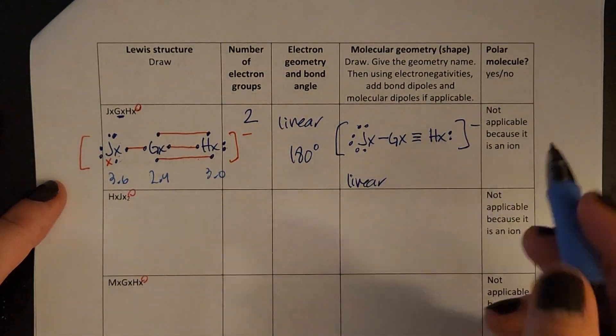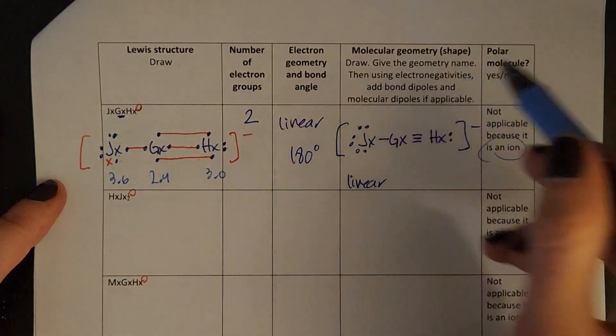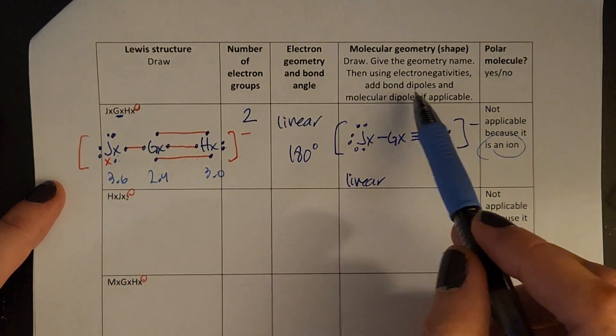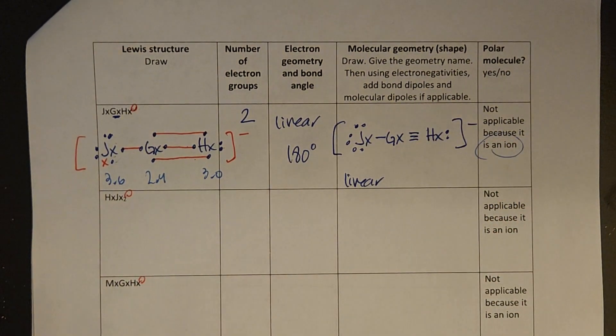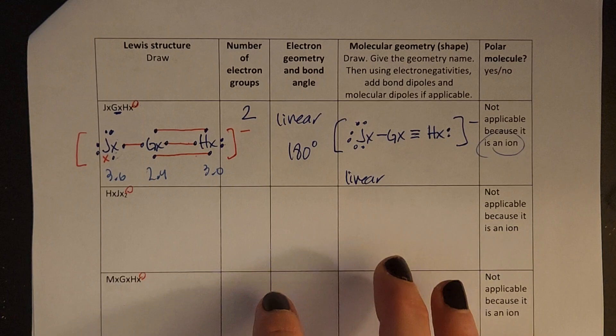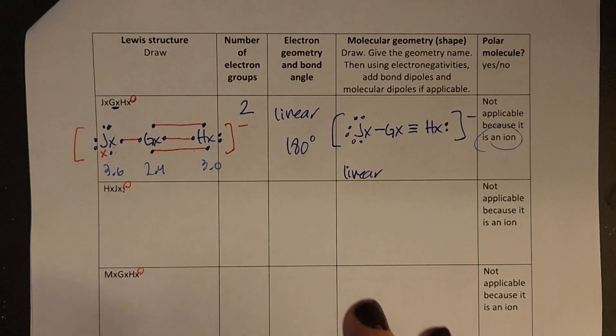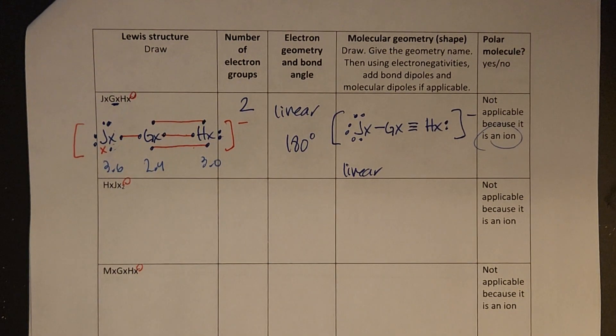And I already have the electronegativities over here, except I don't need those because it's an ion. So if you have an ion, don't worry about doing the bond dipoles or molecular dipoles. So that is how you're going to use those kind of fake elements. I highly recommend that in addition to the regular chapter 3 worksheets, you do all of these as well. That'll be really good practice for your quizzes and just confirm that you understand the concepts really, really well.